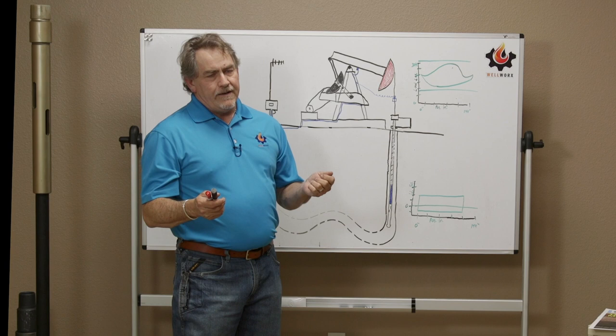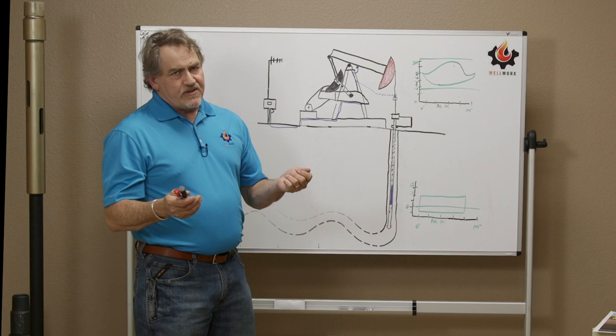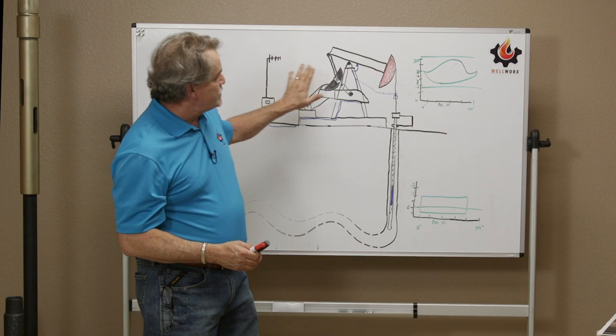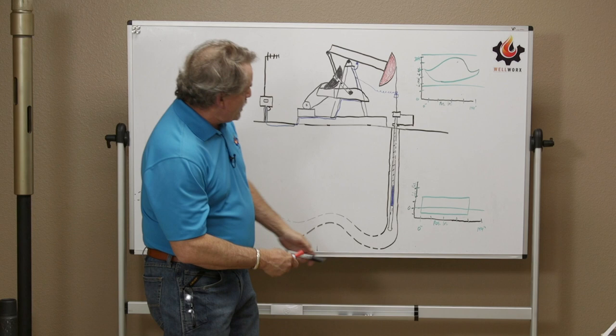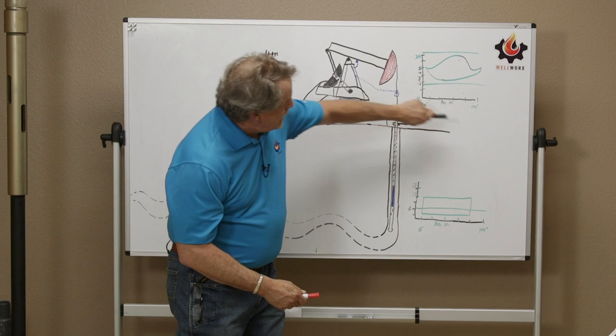Now you could imagine that a brand new well, so you go out and you drill a well. And the well most likely has enough energy that it doesn't require this system or any type of artificial lift system. The well can flow naturally to surface. That means that the well has enough energy to support the weight of the fluid column in the well and actually push liquid out.